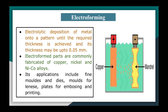The second method of metal coating is electroforming. In this method, electrolytic deposition of metal onto a pattern is carried out until the required thickness is achieved. The pattern is then removed to leave the formed part, called the electroformed part. Its thickness may be up to 0.05 mm. Electroformed parts are commonly fabricated from copper, nickel, and nickel-cobalt alloys. Applications include fine molds and dies, molds for lenses, and plates for embossing and printing. The schematic diagram of the electroforming process shows the mandrel being coated by the copper metal.